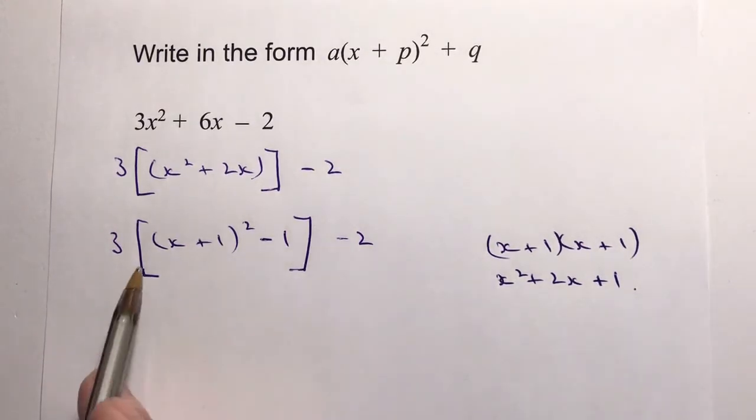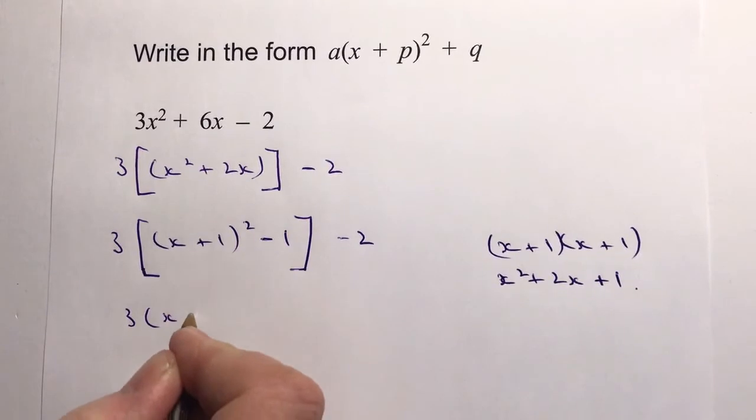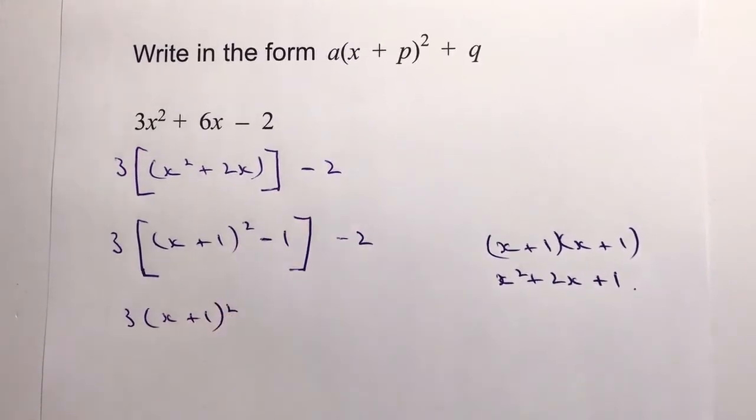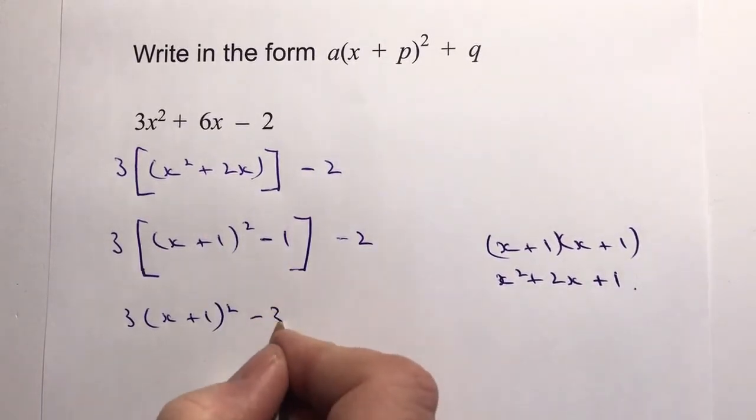So let's multiply this out. I'm going to leave it as 3(x + 1)² because that's fine, that's what they're looking for. But I've also got 3 times -1 here, which is going to be -3.